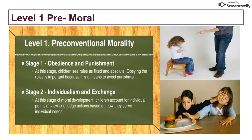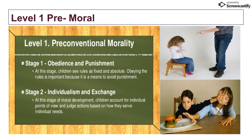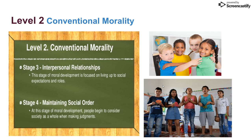Stage two is individualism and exchange. At this stage of moral development, children account for individual points of view and judge actions based on how they serve individual needs. For example, a child might say, 'Yes, I will tell my parents because they will reward me for it.' They do something because they want to be rewarded.